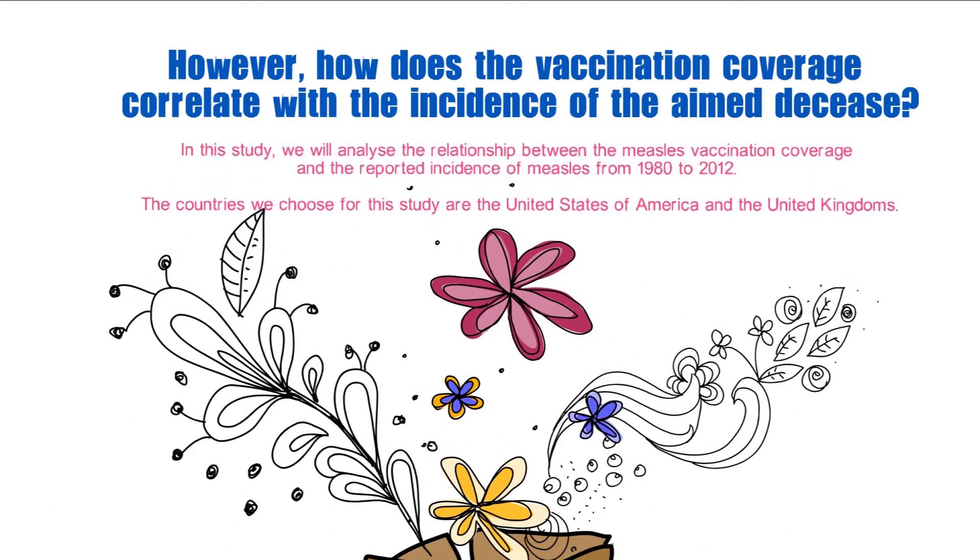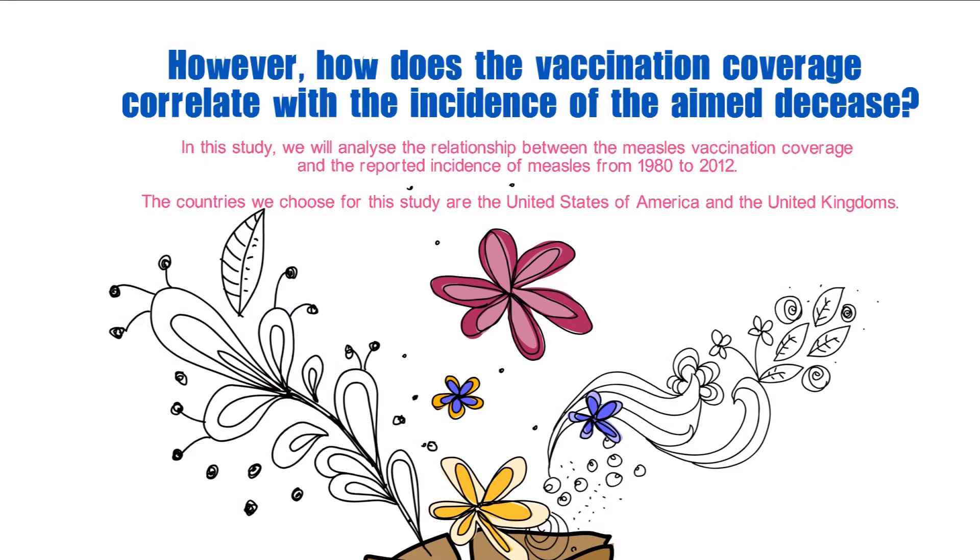In this study, we will analyze the relationship between the coverage of the measles vaccination and the reported incidence of measles from 1980 to 2012. The countries we chose for this study are the United States of America and the United Kingdom.